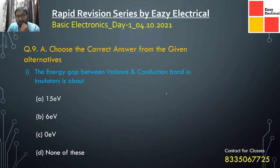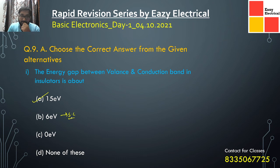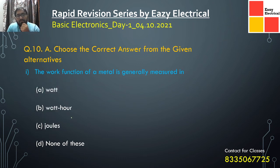Regarding energy band gaps: for insulators, the band gap between valence band and conduction band is approximately 15 electron volts; for semiconductors it is around 6 electron volts; and in conductor materials, generally an overlapping is observed between the valence and conduction band.